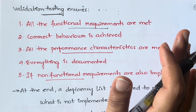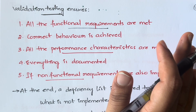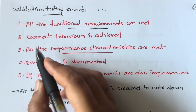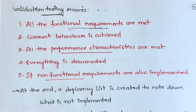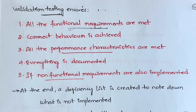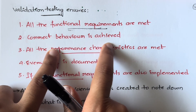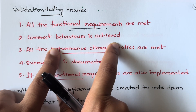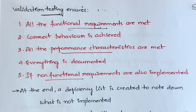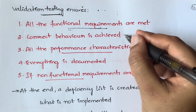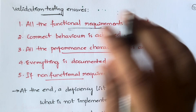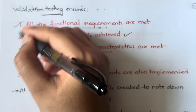Along with checking the validation criteria, it will also ensure that all the functional requirements are implemented — you learned about functional requirements in the requirements engineering chapter. It also checks whether the correct behavior is achieved, meaning whether the system is behaving the way you intended it to.